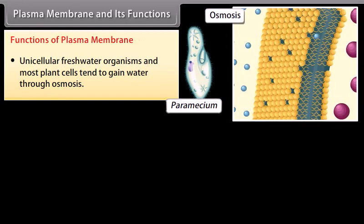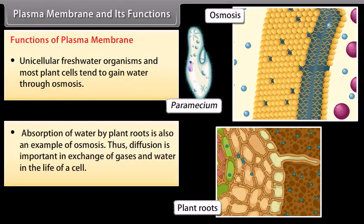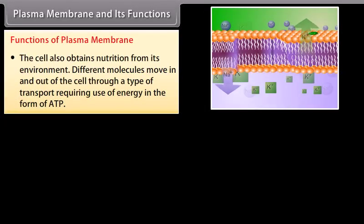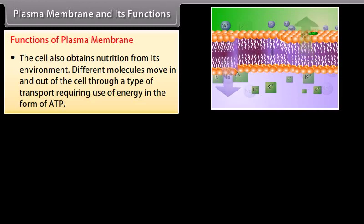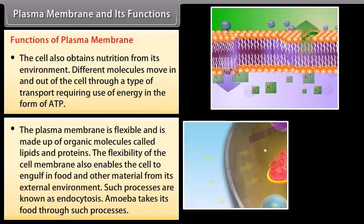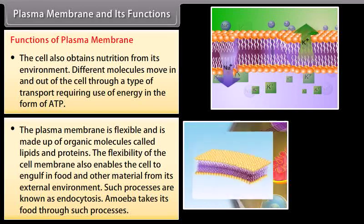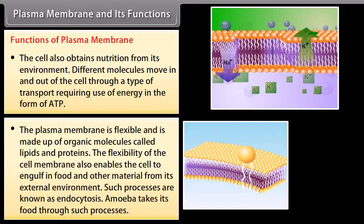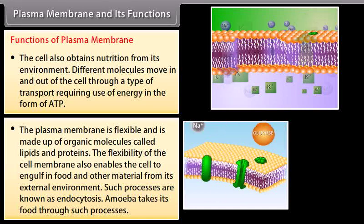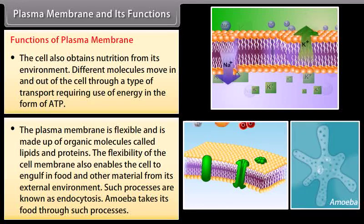Unicellular freshwater organisms and most plant cells tend to gain water through osmosis. Absorption of water by plant roots is also an example of osmosis. Diffusion is important in the exchange of gases and water in the life of a cell. The cell also obtains nutrition from its environment; different molecules move in and out of the cell through a type of transport requiring the use of energy in the form of ATP. The plasma membrane is flexible and is made up of organic molecules called lipids and proteins. This flexibility enables the cell to engulf food and other materials from its external environment — a process known as endocytosis. Amoeba takes its food through such a process.